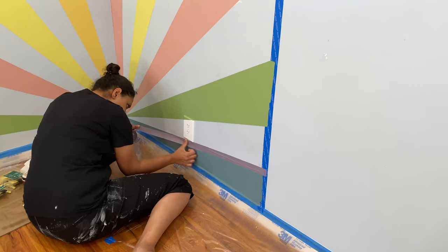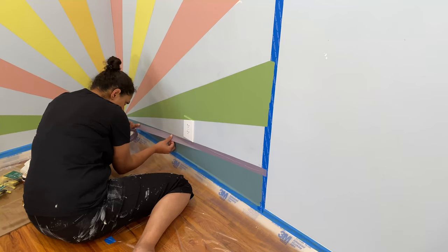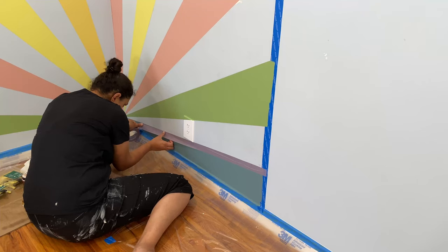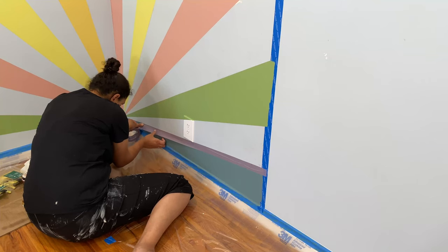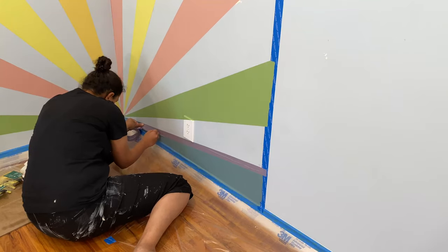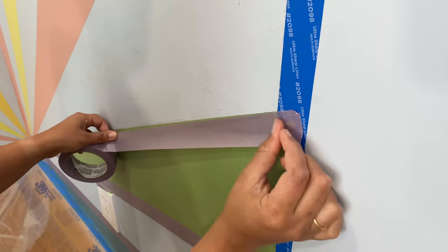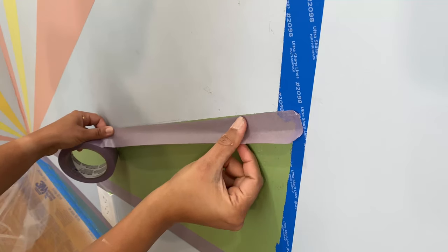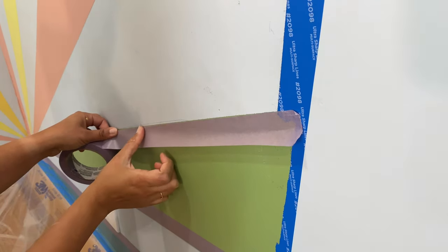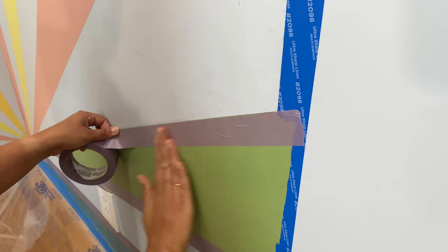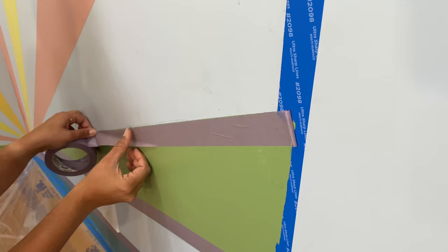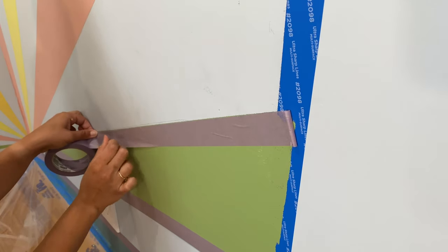Once all the paint had dried to touch I went back in to tape off the next set of lines. Now I am using a painter's tape that is specifically meant for delicate surfaces like freshly painted walls. The process for taping these lines is pretty much the same as it was the first time around except that as I am taping these lines I'm making sure that there is an ever so little overlap between the previous painted lines so that we don't see the base color peeping through.